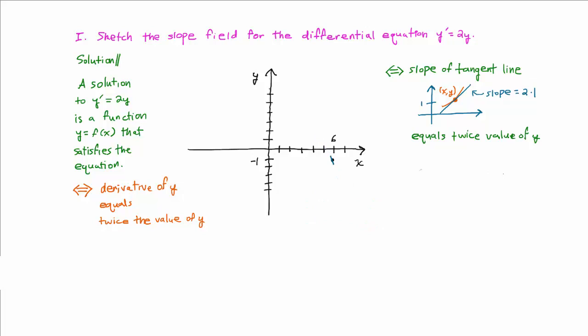Let's try this with a few other points. At the point 1, 1, the slope would be 2 times 1, which is 2, and the tangent segment would look roughly like that.